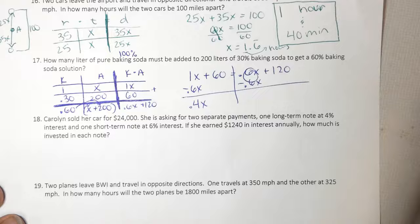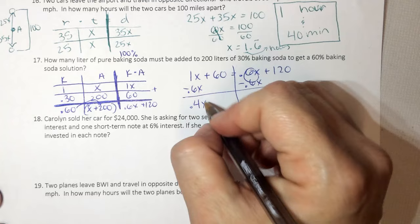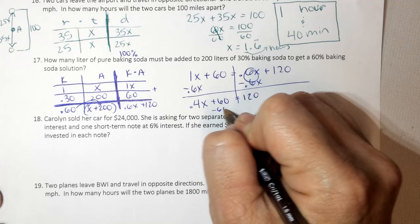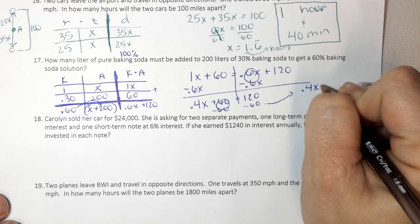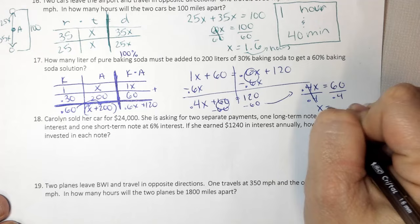And I set it up the same every time. Top plus middle equals bottom. So 1x plus 60 equals 0.6x plus 120. Move my smallest x first, minus 0.6x. That zeroes out. And I'm left with 0.4x. Plus 60 equals 120. So now I need to move the 60. So minus 60, minus 60. And I get 0.4x equals 60. Divide both sides by 0.4. And I get 150.